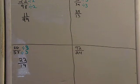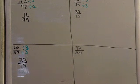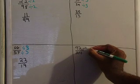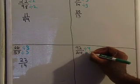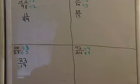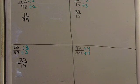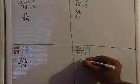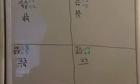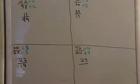How about the next one? 92 and 24. So, what number can go into both 92 and 24? How about 4? So, what is 92 divided by 4? And what is 24 divided by 4?